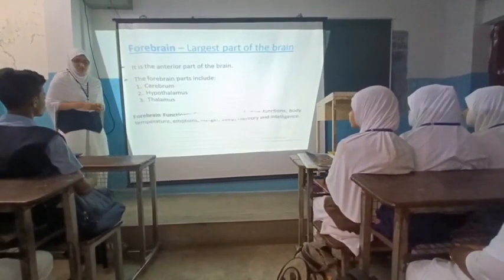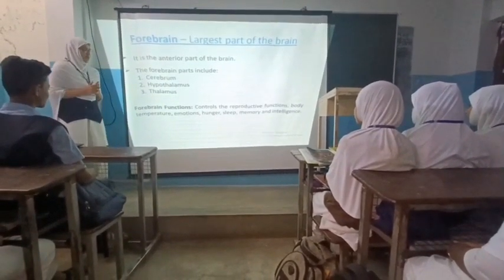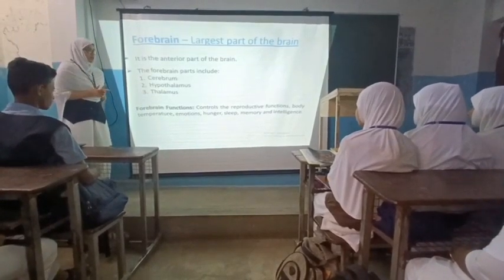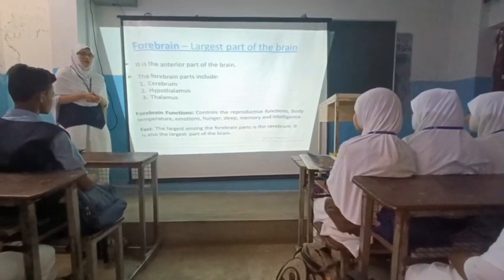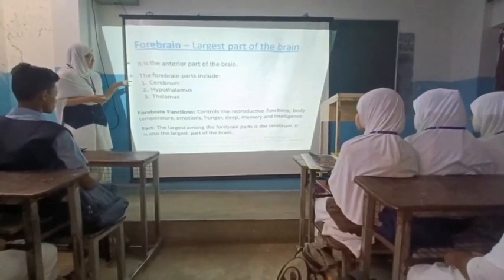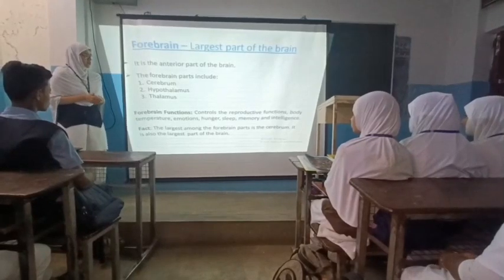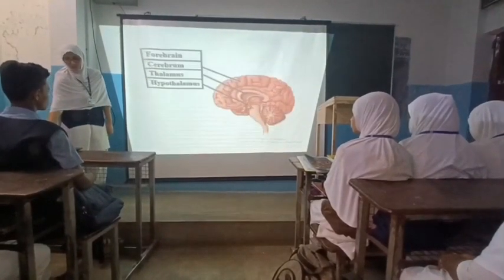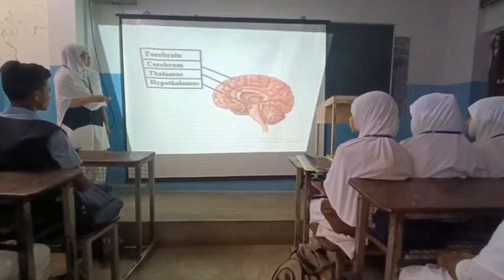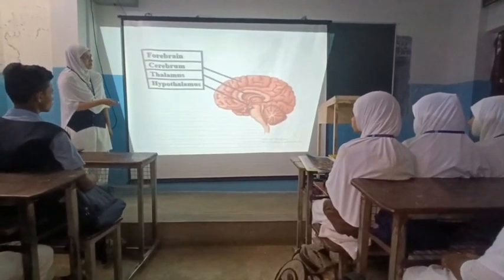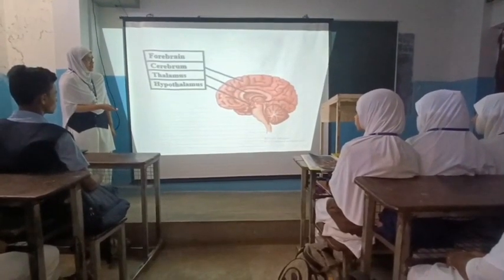The forebrain's functions include controlling reproductive function, body temperature, emotions, hunger, sleep, memory, and intelligence. One fact about the forebrain: the largest among its parts is the cerebrum, which is also the largest part of our brain. As you can see here in the diagram, this whole part is called the cerebrum, this is called the thalamus, and this is called the hypothalamus.